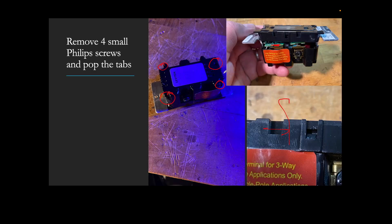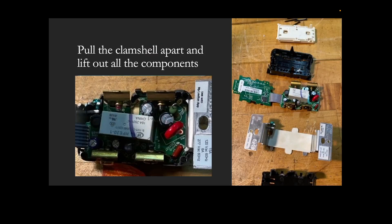The next step is to remove the four small screws on the back of this module. Pull them out, and then push in on that tab. There's a tab on each side of the case and that'll take the clamshell and allow you to get it apart. You can see the circuitry inside there as you pull that thing apart.